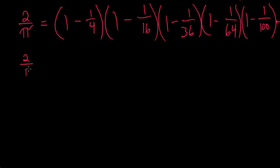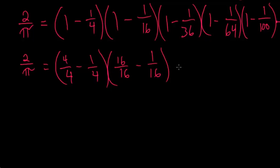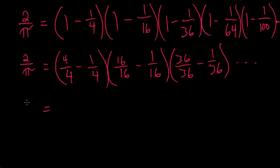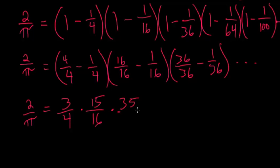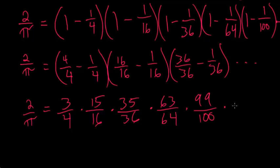Evaluating these fractions: 2/π = (3/4) · (15/16) · (35/36) · (63/64) · (99/100) · … Notice the pattern: in each fraction, the numerator is always one less than the denominator.